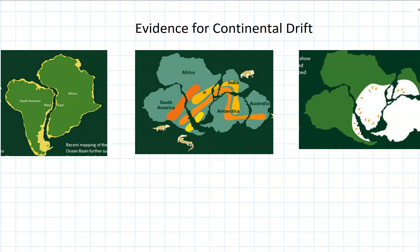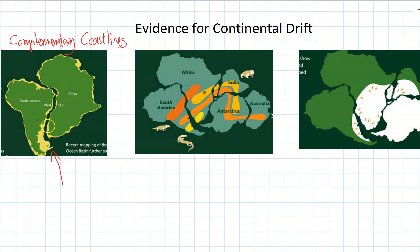There are three bits of evidence that prove continental drift is true. The first one is complementary coastlines, which basically says that when you look at a map, lots of the continents seem to fit together like a puzzle. Particularly South America and Africa — they seem to join perfectly, and that's because they were joined back when the continents were part of a supercontinent.